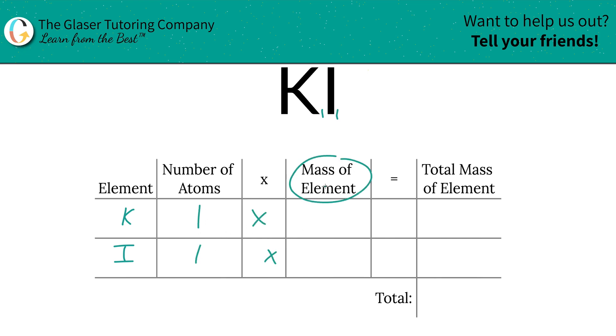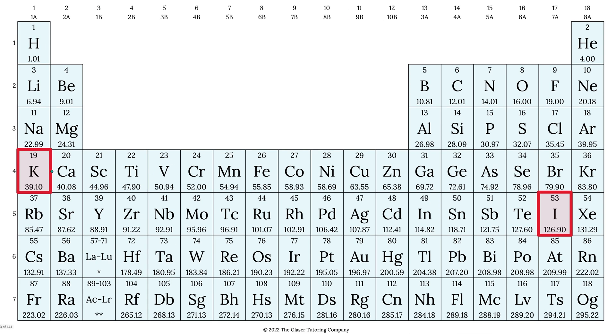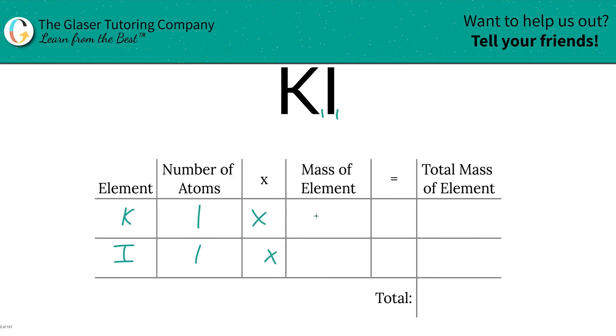Then we're going to take the number of atoms and multiply by the mass of each element. That's where the periodic table comes in. Here's the mass of potassium: 39.1. Mass of iodine is 126.9.